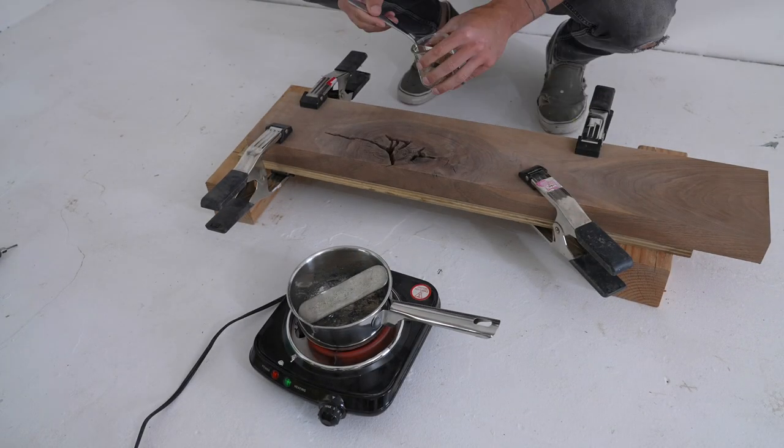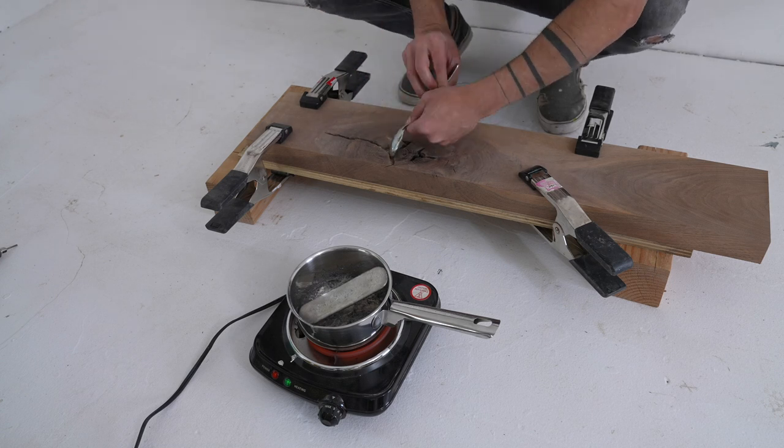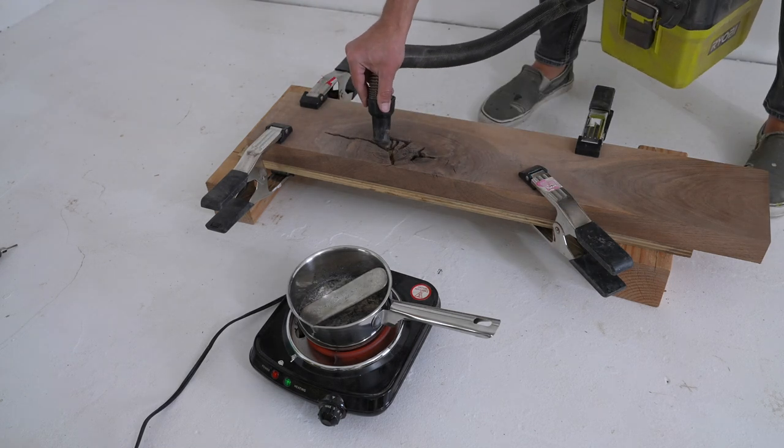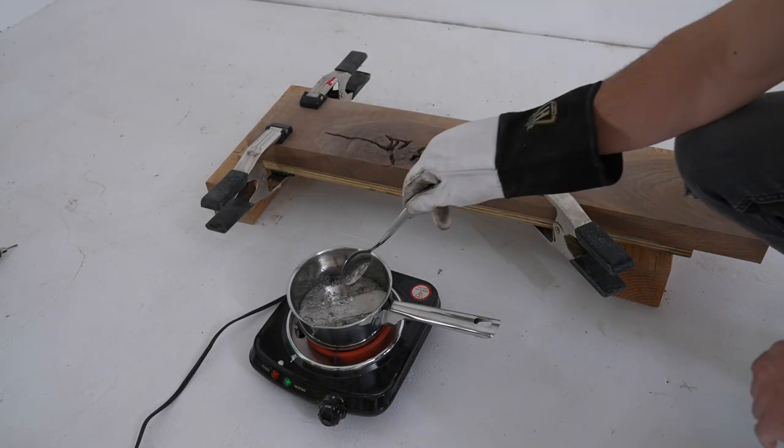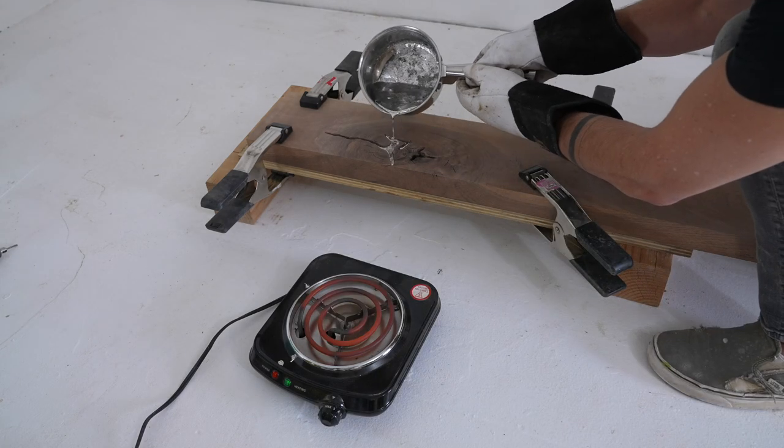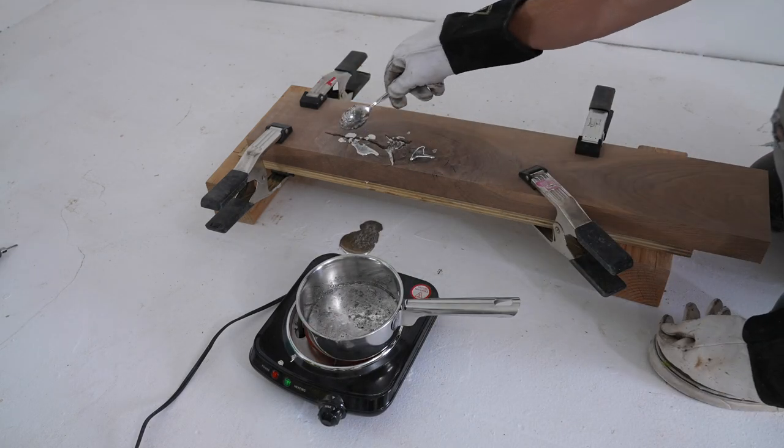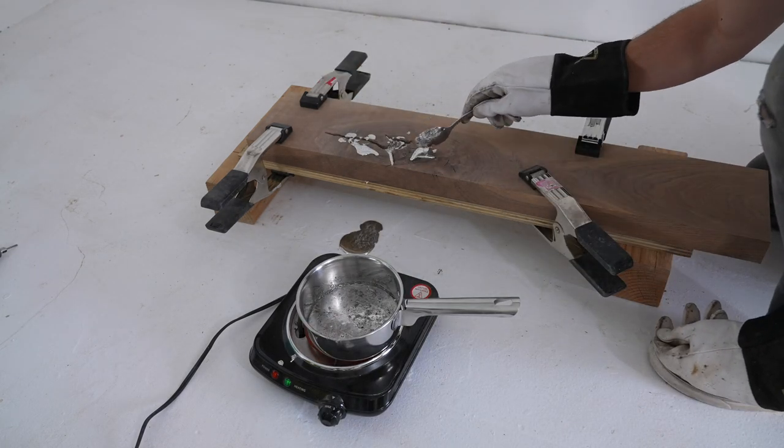Now this alloy melts at just about 280 degrees Fahrenheit. That's not really that hot. Chocolate chip cookies are baked at higher temperatures, but it is molten metal so you do want to be careful and I had a fire extinguisher nearby. I put a little sand in the bottom of the knot hole which went all the way through and then poured it right in.